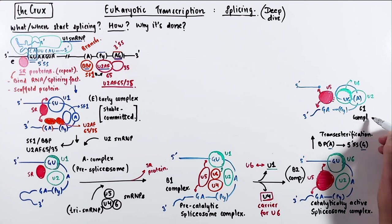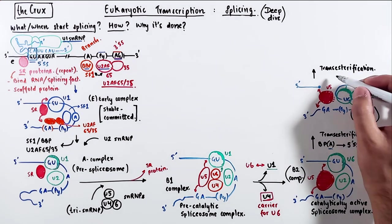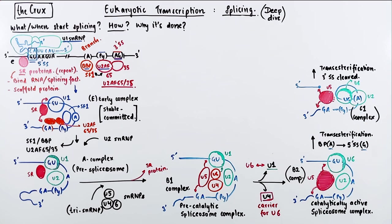Anyways, this complex is called the catalytic 1 complex, which moves on to the second transesterification step, where the 3' splice site is cleaved off. In this step,